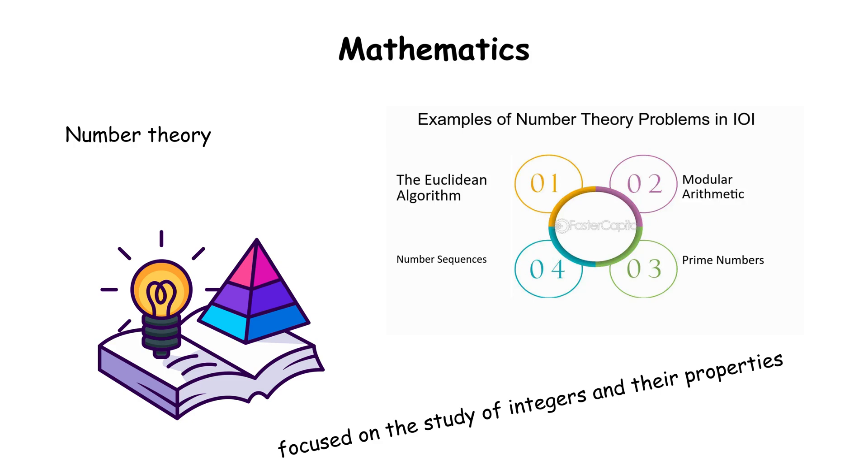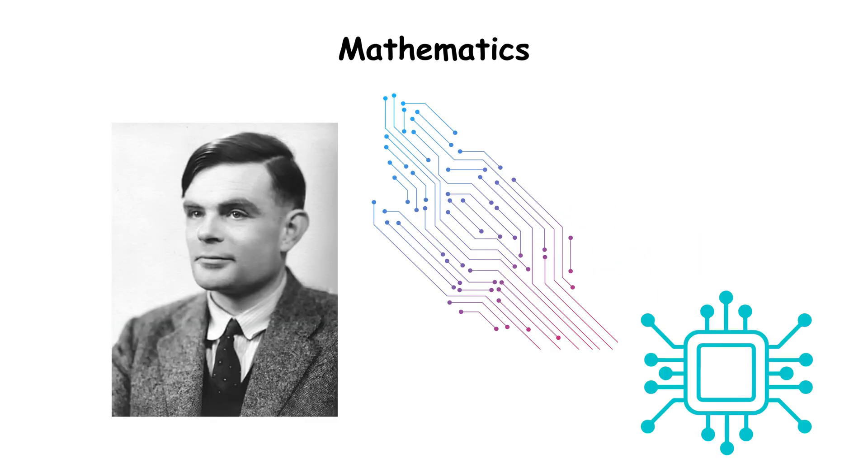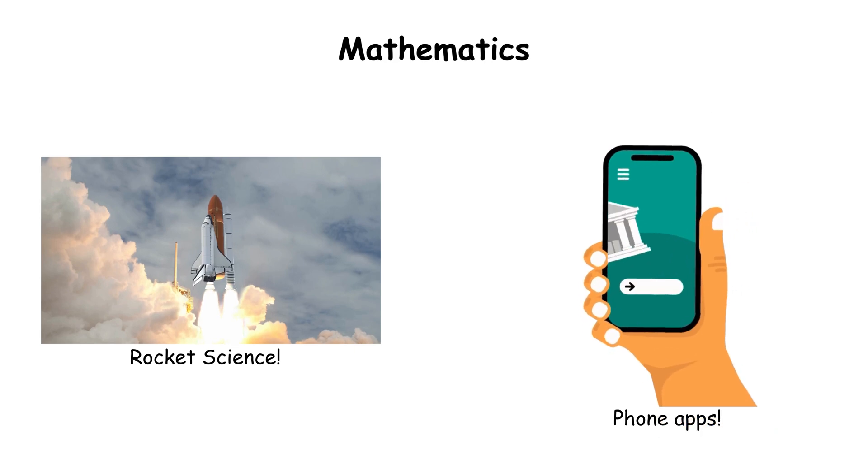Statistics helps interpret data and applied math models real-world systems. Even number theory, the purest kind of math, can pop up in encryption and computer science. From Euclid of Alexandria's geometry to Alan Turing's early computing, math powers everything from rocket launches to smartphone apps.